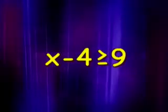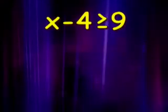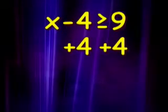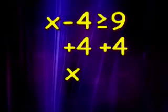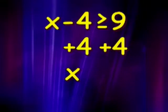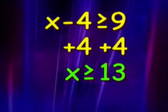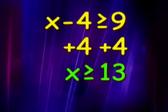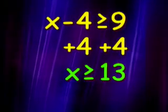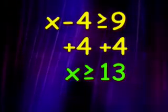Using the same rules we would use in solving an equation, we'll add 4 to both sides of this inequality. That will eliminate the minus 4 and leave us with our solution: x is greater than or equal to 13. That means that either 13, or any number larger than 13, makes this inequality true.